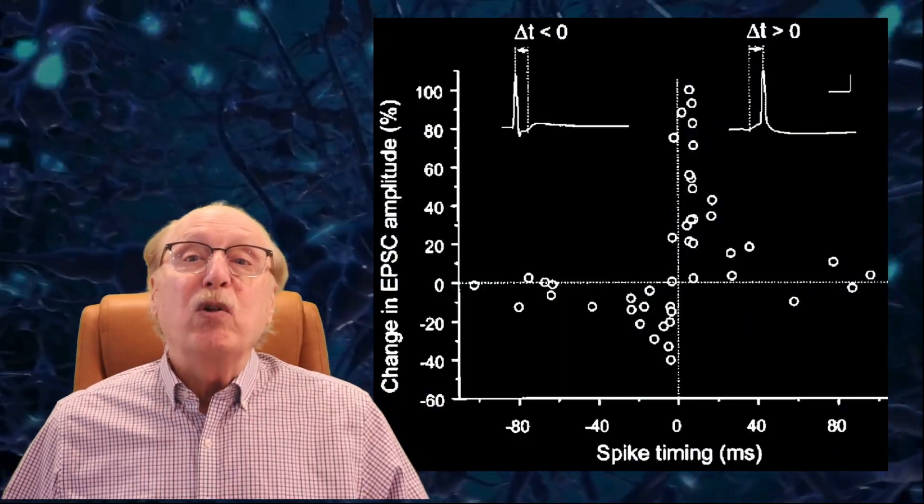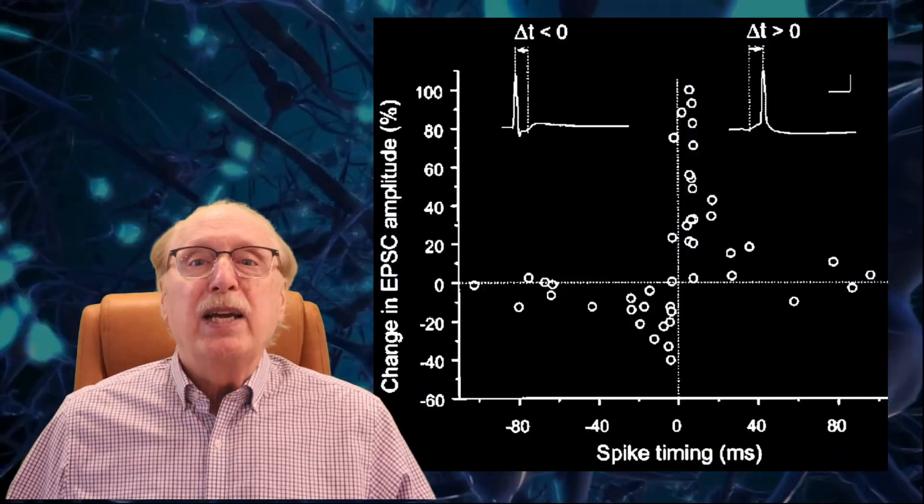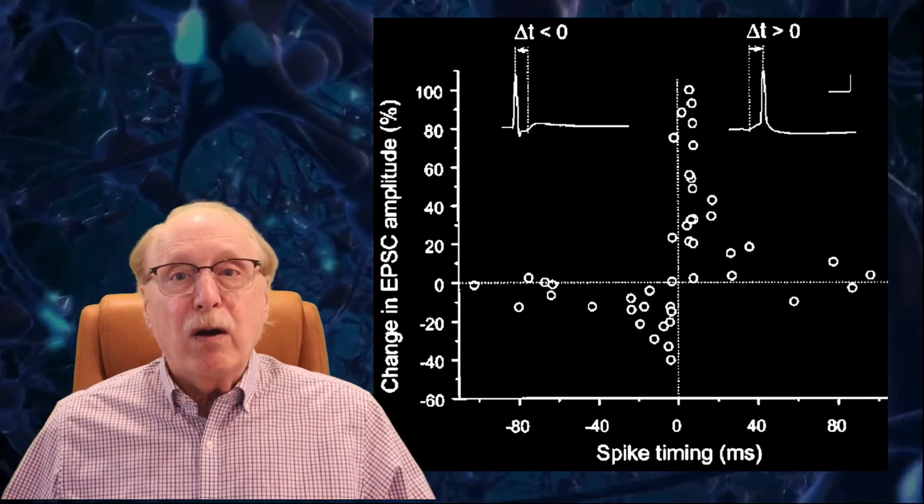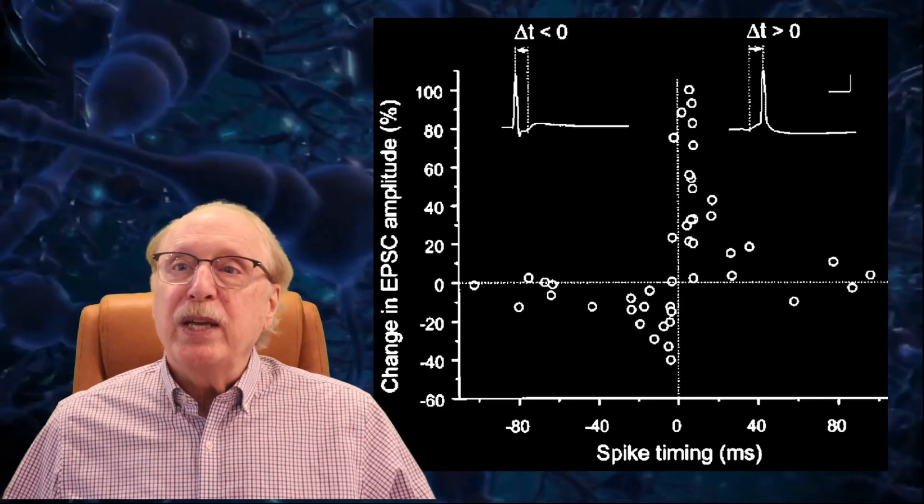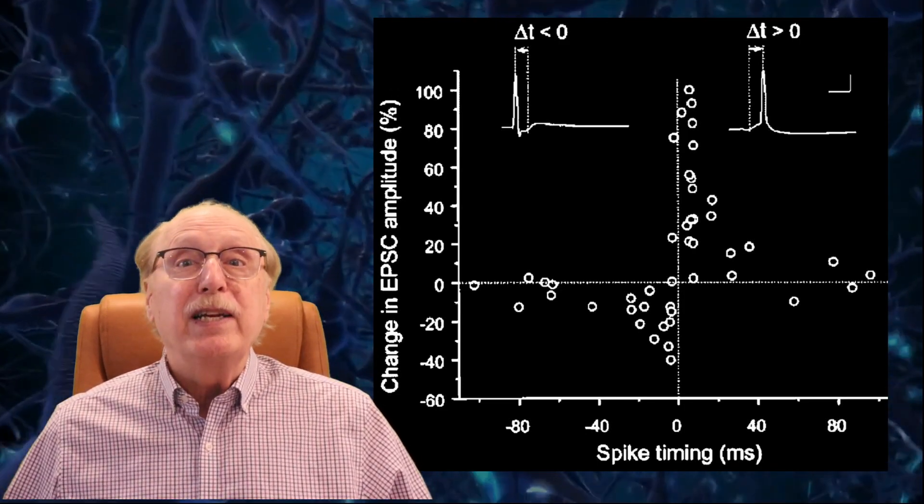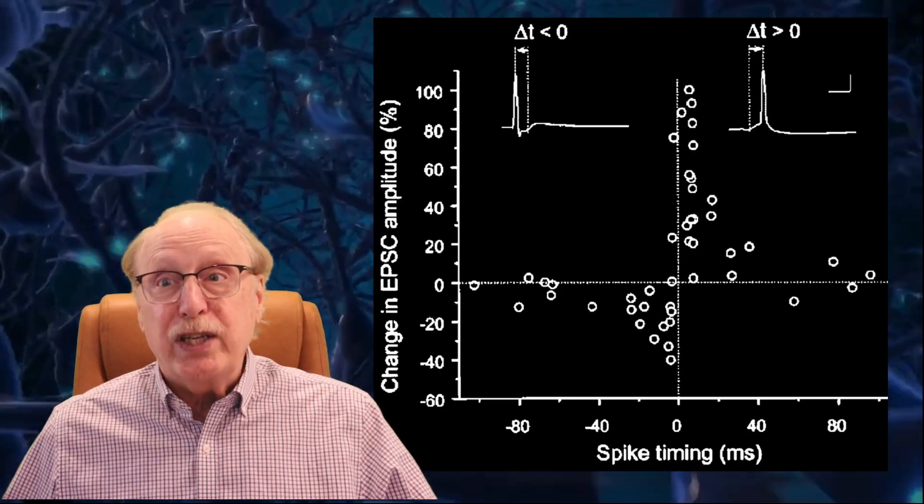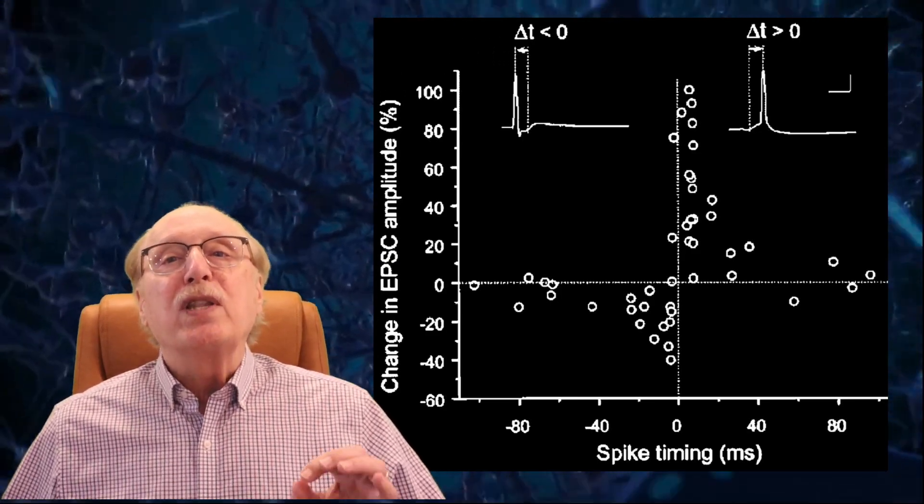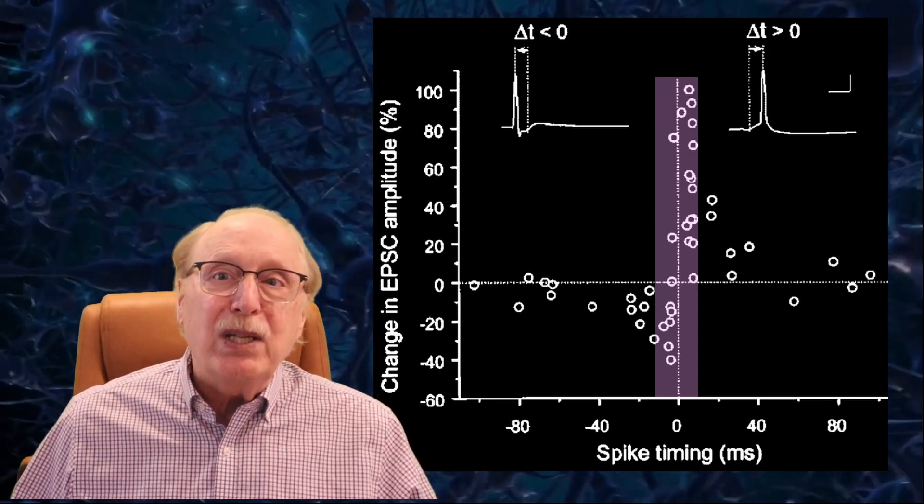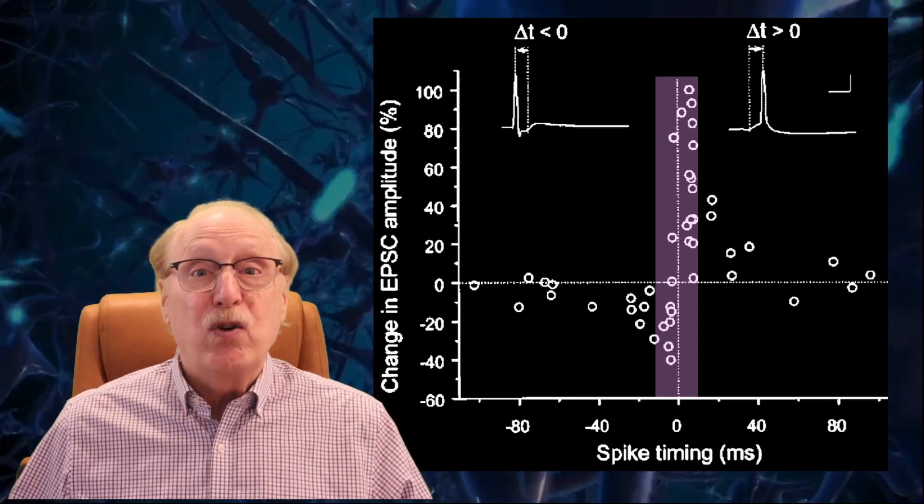But there are some limitations. When we look at the experimental data, and this is the best image I could find, you see a large amount of scatter. In this graph, the relative spike timing is plotted horizontally against the relative change in the synapse weight. Note that the lion's share of the action happens within 10 ms of the spikes being coincident.